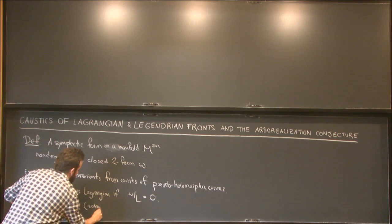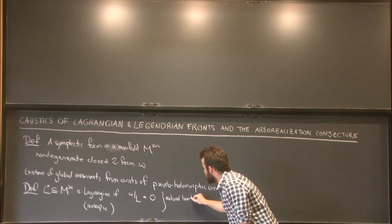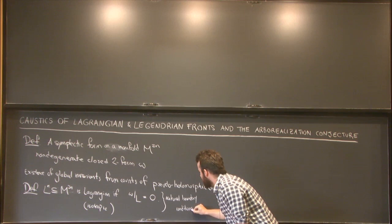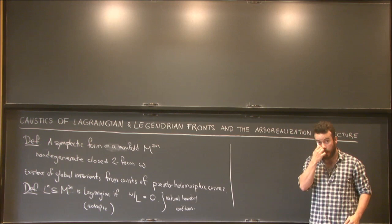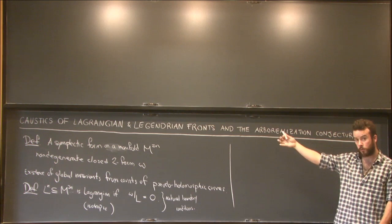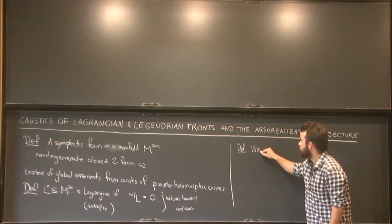And these are the natural boundary conditions for these counts. Now, if the manifold is compact, then we can talk about these counts meaningfully. If the manifold is not compact, we need some kind of control at infinity and a powerful control of some kind of convexity. I want to talk about a particular class of convex at infinity symplectic manifolds, which are Weinstein manifolds.